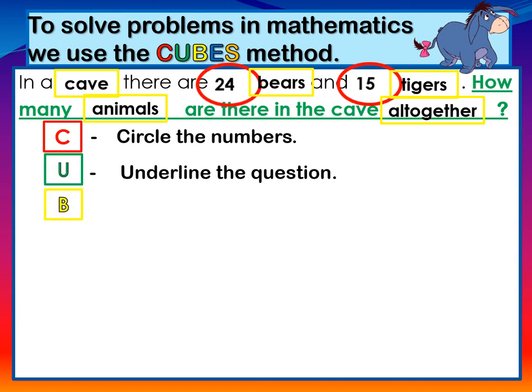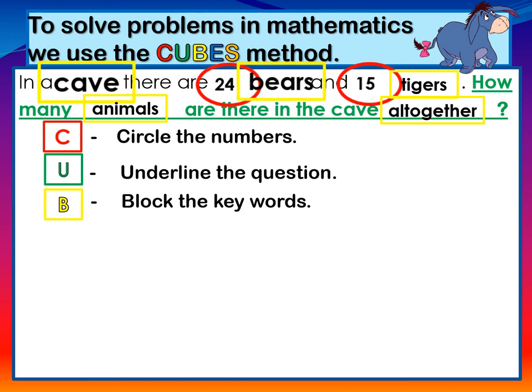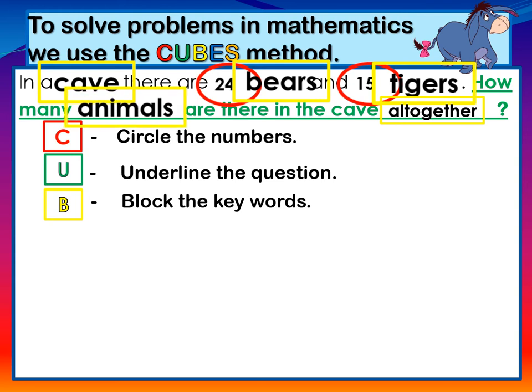B is for block. Block the key words: Cave, bears, tigers, animals, all together.